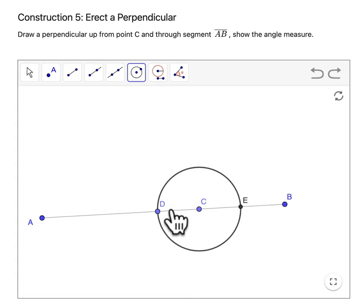This segment DE, what you're essentially doing at this point is creating a perpendicular bisector of that smaller segment.